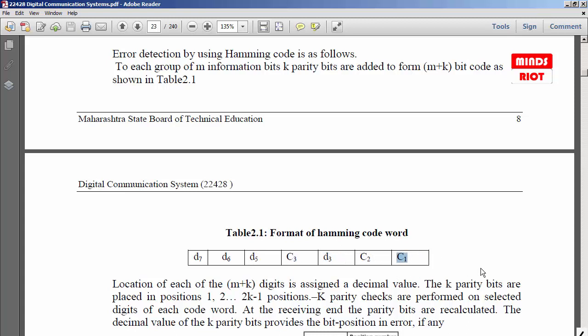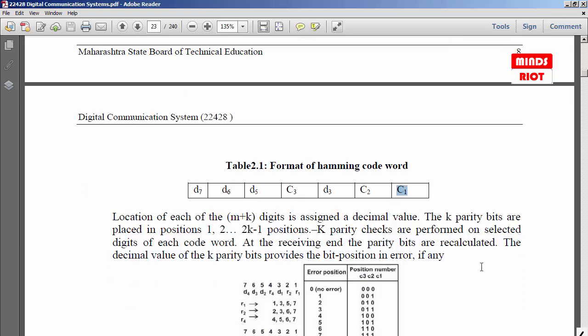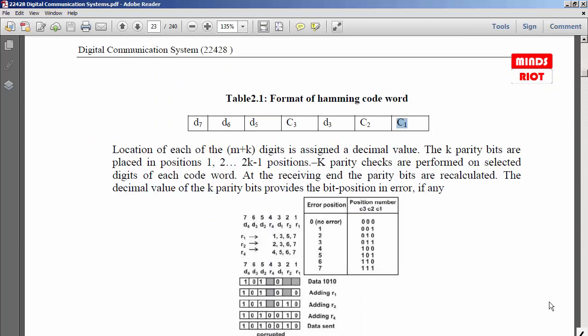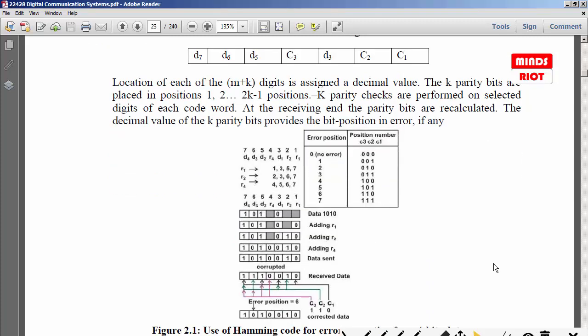Now in this practical we are going to find out whether error has occurred in the received bit. We can find this with the help of this formula. As discussed in the earlier session, R1 depends on the parity of the 1st, 3rd, 5th, and 7th bits, whereas R2 has the combination of 2nd, 3rd, 6th, and 7th bits, and R4 has the combination of 4th, 5th, 6th, and 7th bits. We are going to implement this circuit using multi-sim.